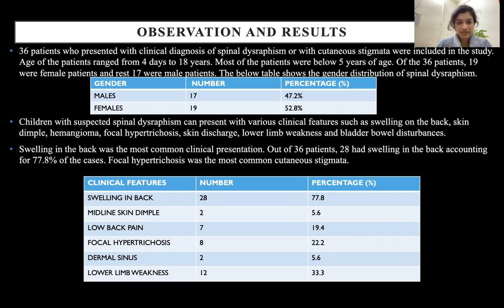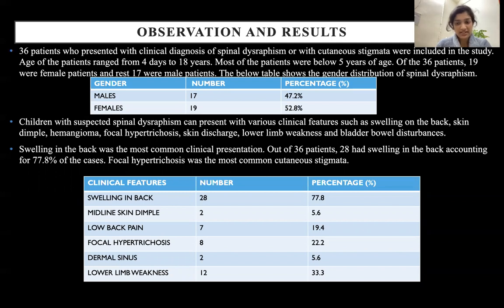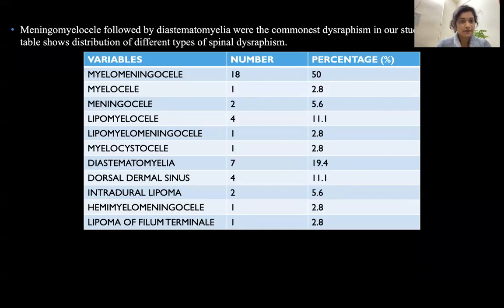Children with suspected spinal dysraphism can present with various clinical features such as swelling on the back, skin dimple, hemangioma, focal hypertrichosis, skin discharge, lower limb weakness, and bladder-bowel disturbances. In our study, swelling in the back was the most common clinical presentation, present in 77.8% of cases. Focal hypertrichosis was the most common cutaneous stigmata, present in 22.2% of cases.